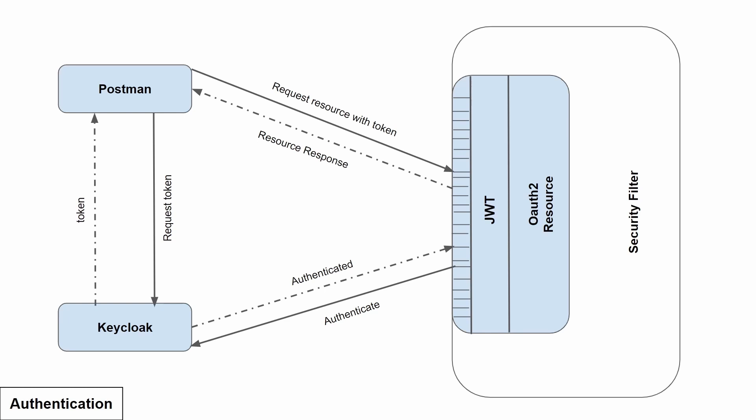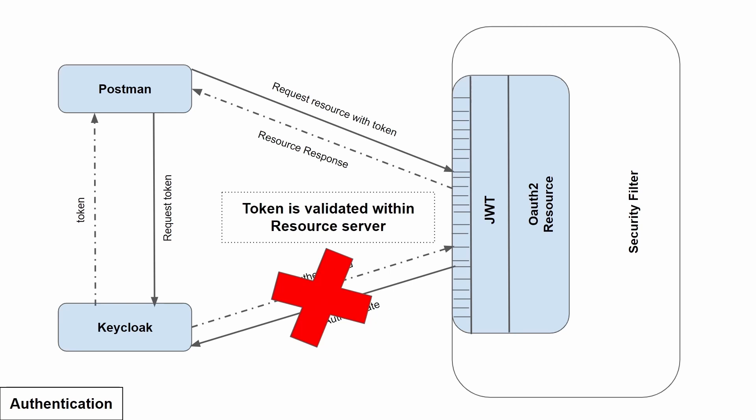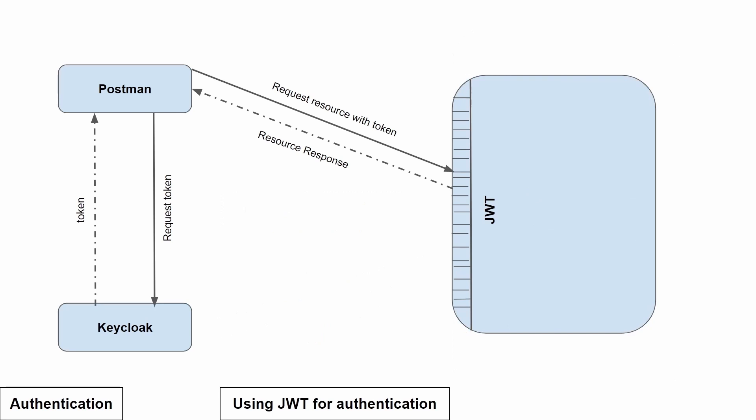Let's see JWT in detail. Whenever you are using JWT for authentication, the JWT will not send any request to Keycloak. Instead, the token received from Postman or any other requester will be validated within the resource server itself by the JWT validator and will not be sent to Keycloak. Since it doesn't send the request, I have removed that communication from the diagram.